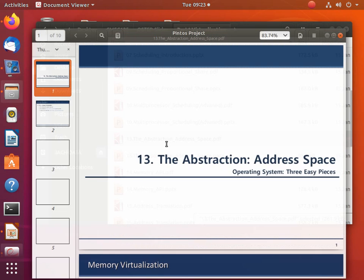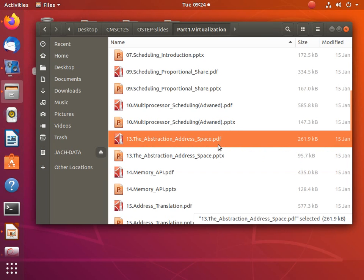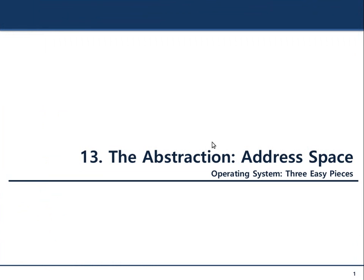We're now going to move on to the next virtualization: memory virtualization. The first part talks about virtualization of computing resources. There are three main resources in a computer system: the processor, the memory, and the storage. The second is virtualization of the memory. Why is memory important? Because in order for the CPU to execute instructions, the code and data should be in the main memory. So the operating system should somehow manage the memory.